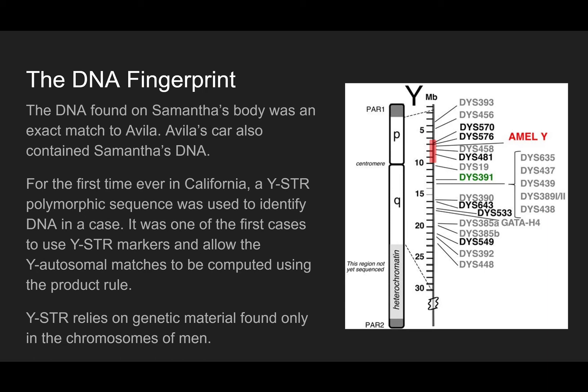The DNA found on Samantha's body was an exact match to Avila, and Avila's car also contained Samantha's DNA. For the first time ever in California, a YSTR polymorphic sequence was used to identify DNA in a case — one of the first cases to use YSTR markers and allow the Y autosomal matches to be computed using the product rule.